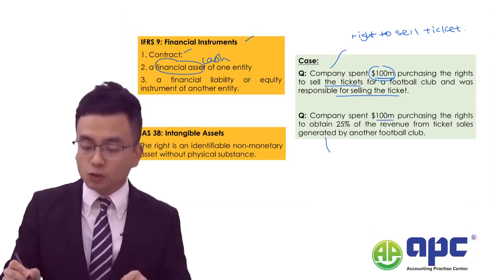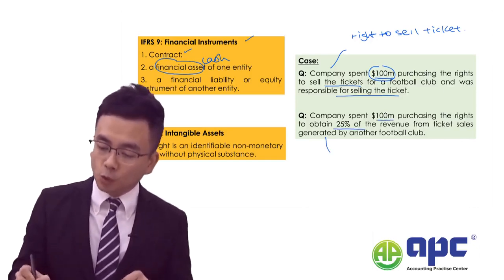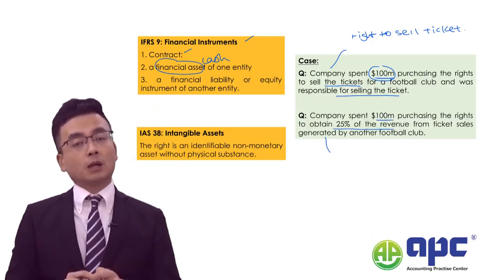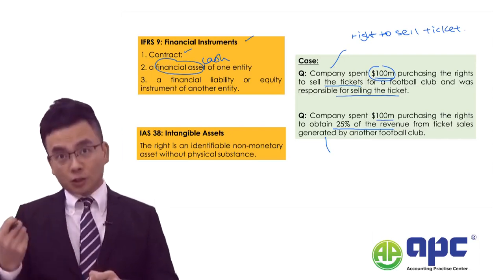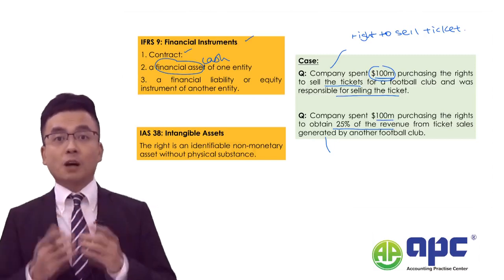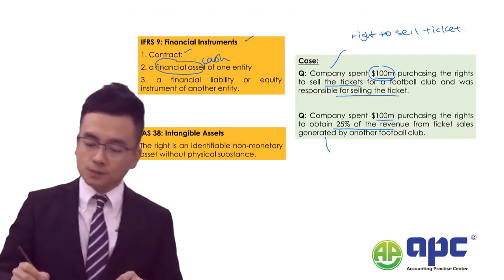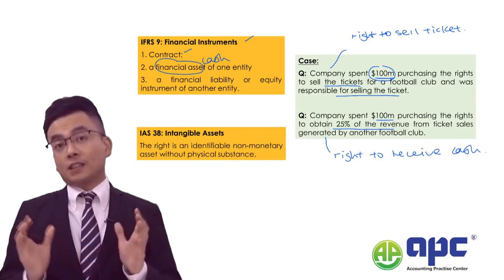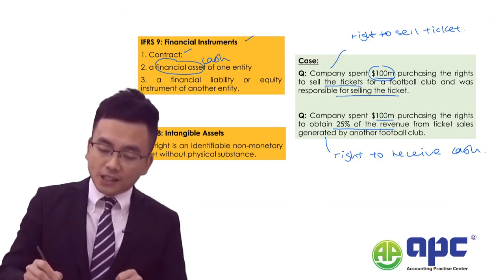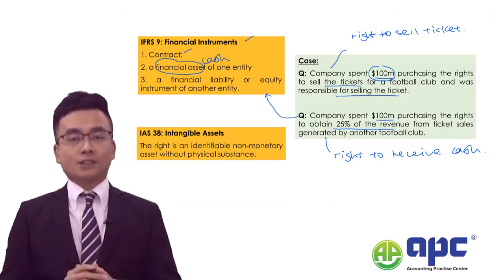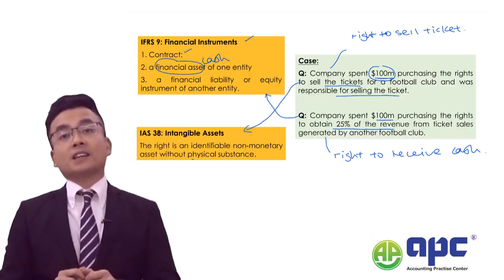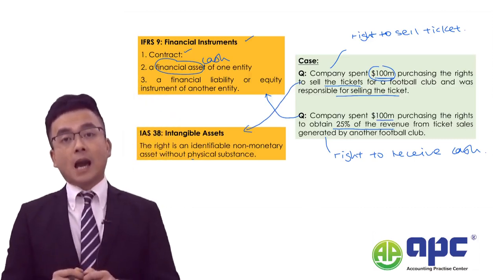In the second example, I spent $100 million purchasing the right to obtain 25% of the revenue from ticket sales generated by the football club. Which means if you sold $100 of revenue, I can share 25% of that because I have the right to receive cash. So in the second case, yes, it would be a financial asset. Therefore, I would define the first case as an intangible asset per IAS 38.